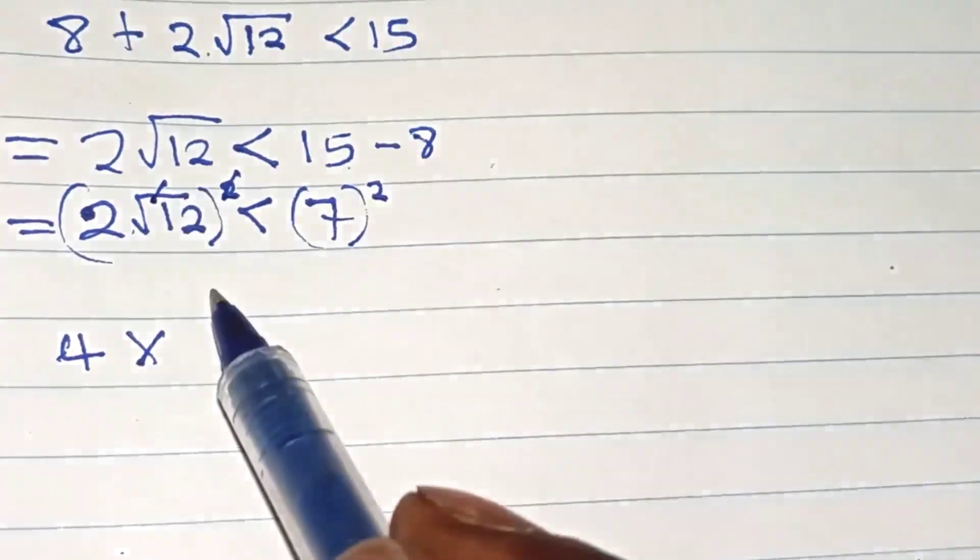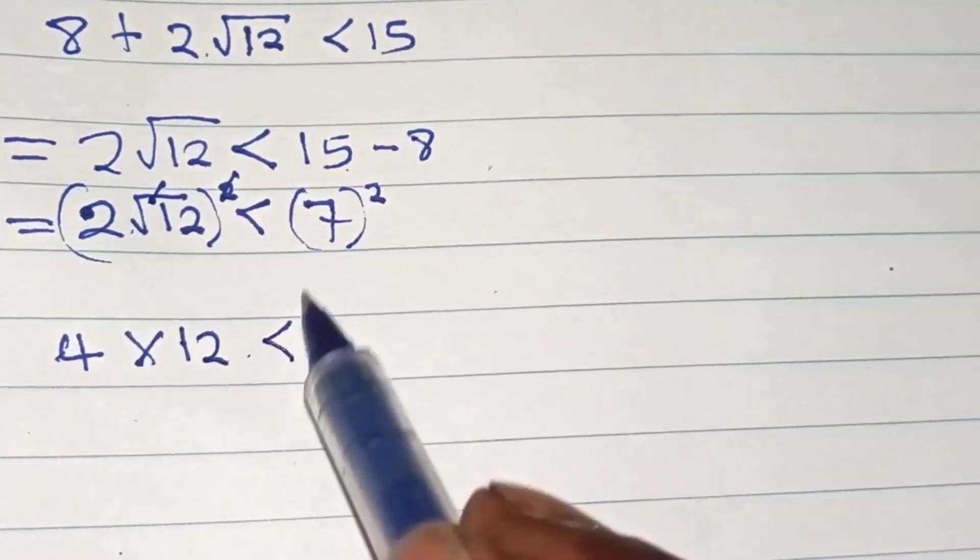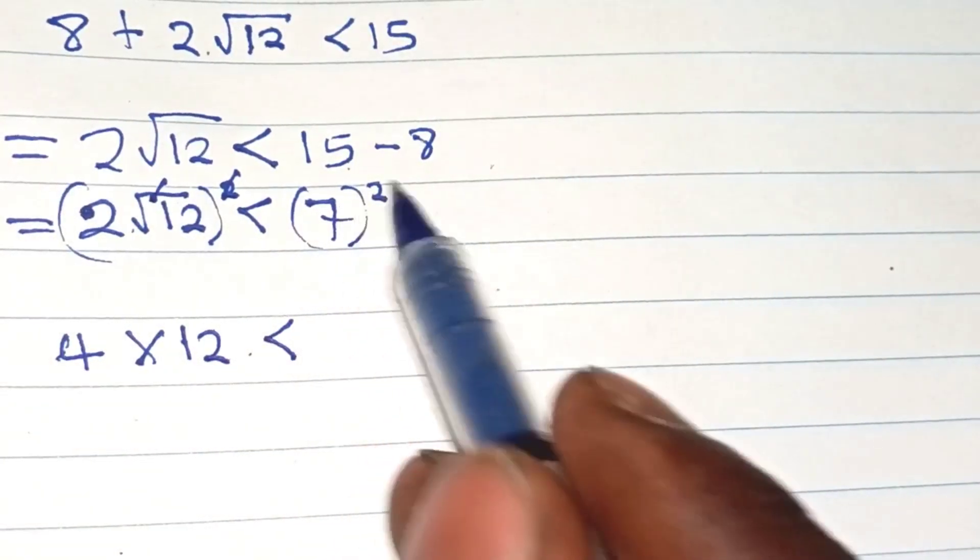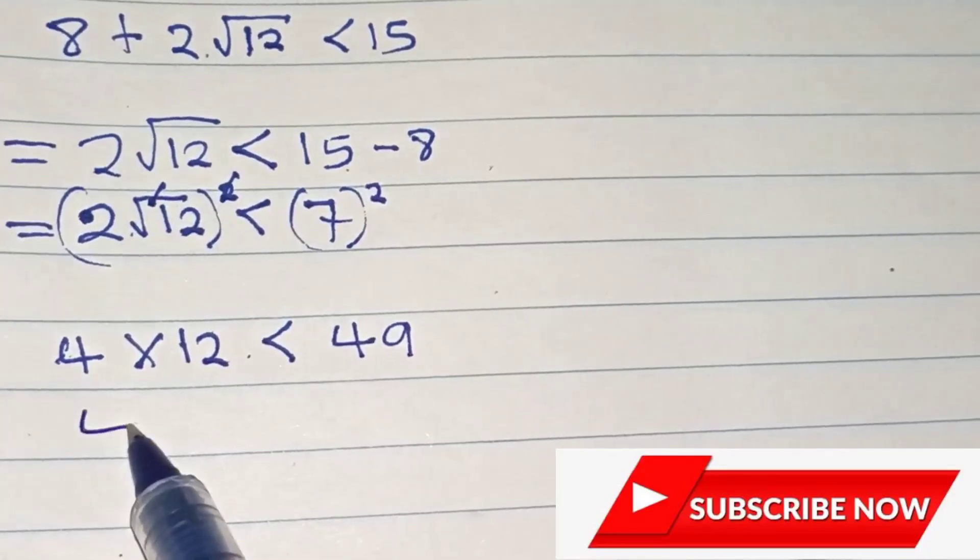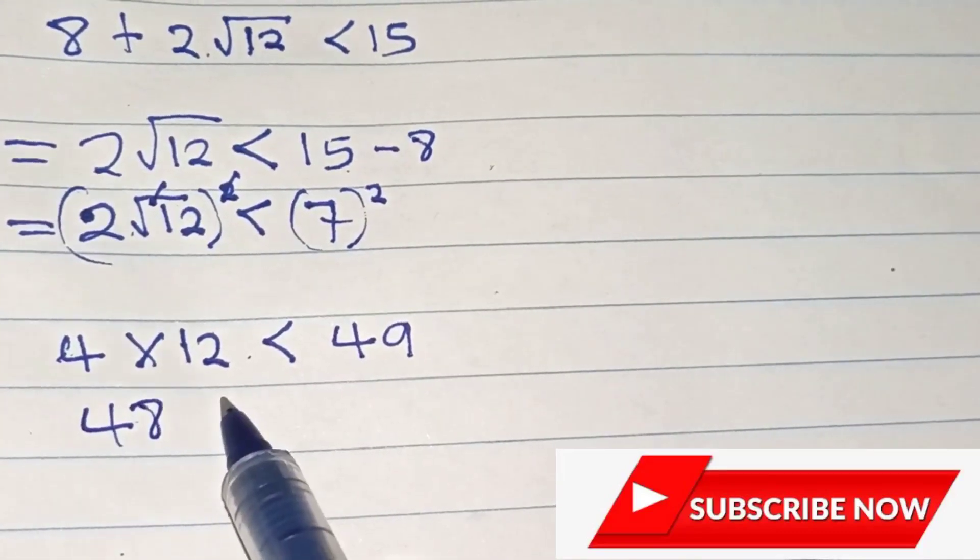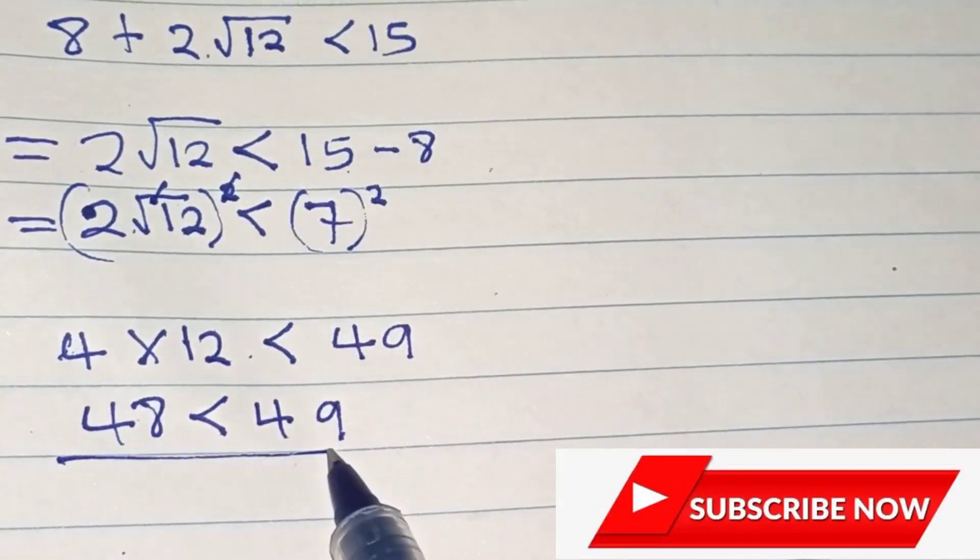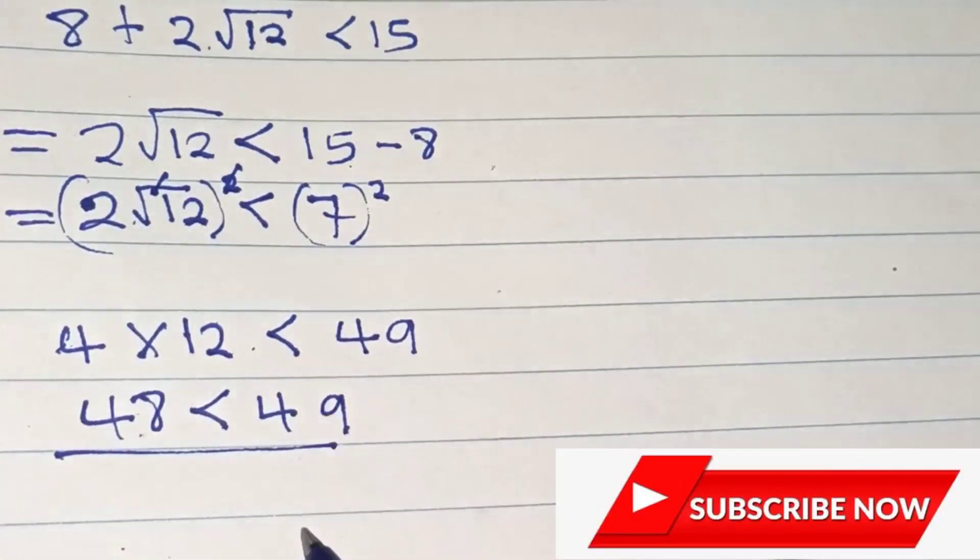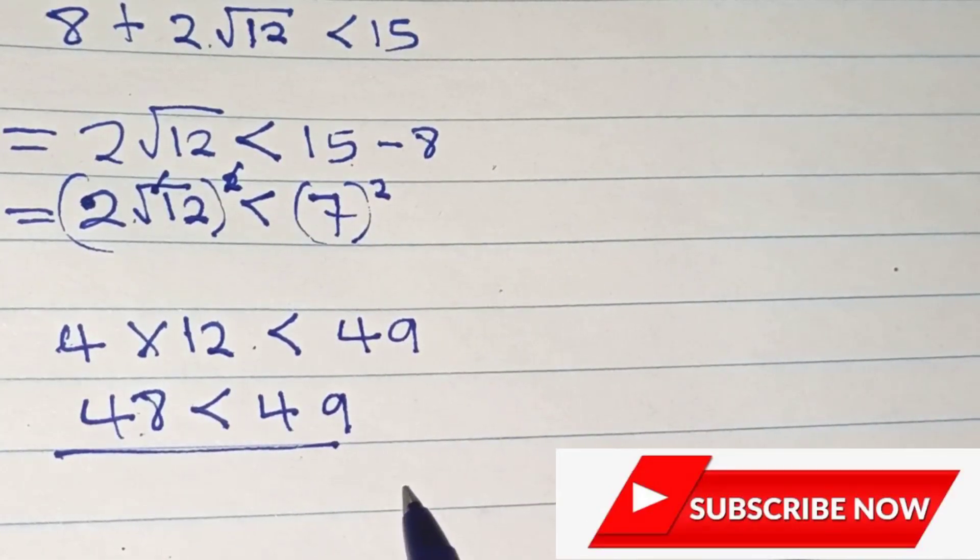The square cancels the square root. We have 12 here, and 7 squared is 49. 4 times 12 is 48, which is less than 49. This is the final solution. 48 is less than 49, which is correct.